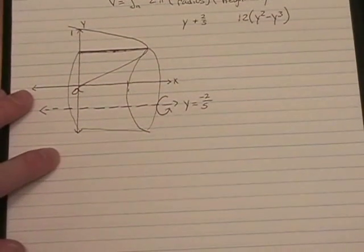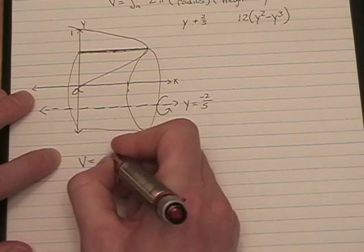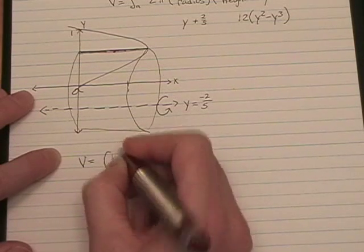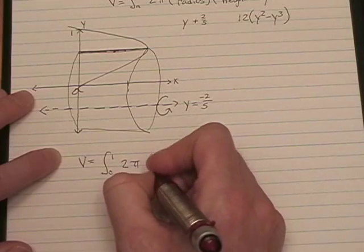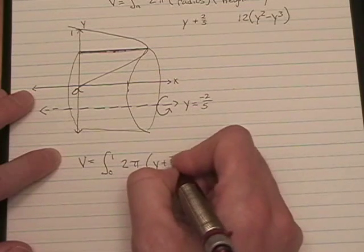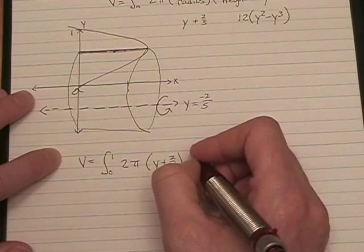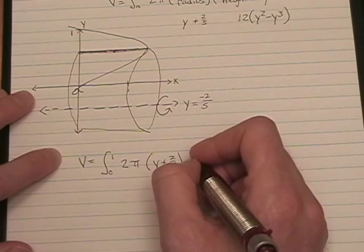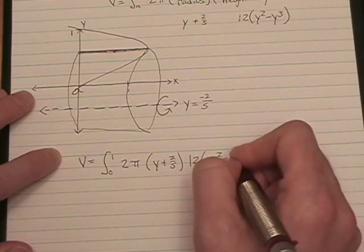I'm not saying it's going to look pretty, but it is going to be doable. V equals the integral from 0 to 1, 2 pi times y plus 2 fifths times 12 y squared minus y cubed.